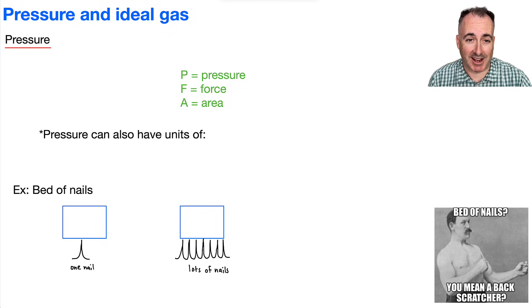Pressure and ideal gas. I'm going to have this here because we're going to talk about bed of nails. Let's talk about pressure, and we've got an equation from our data booklet, which is nice. It goes like this: P equals F over A.